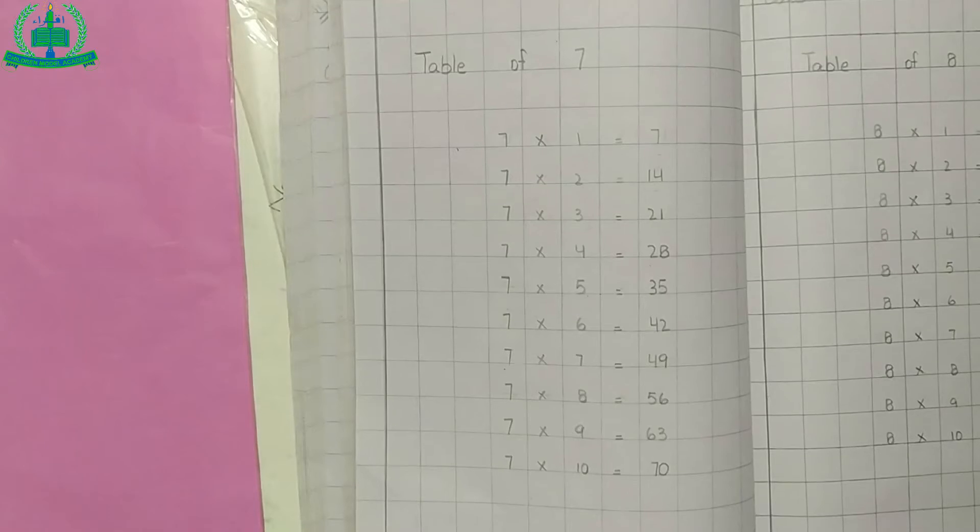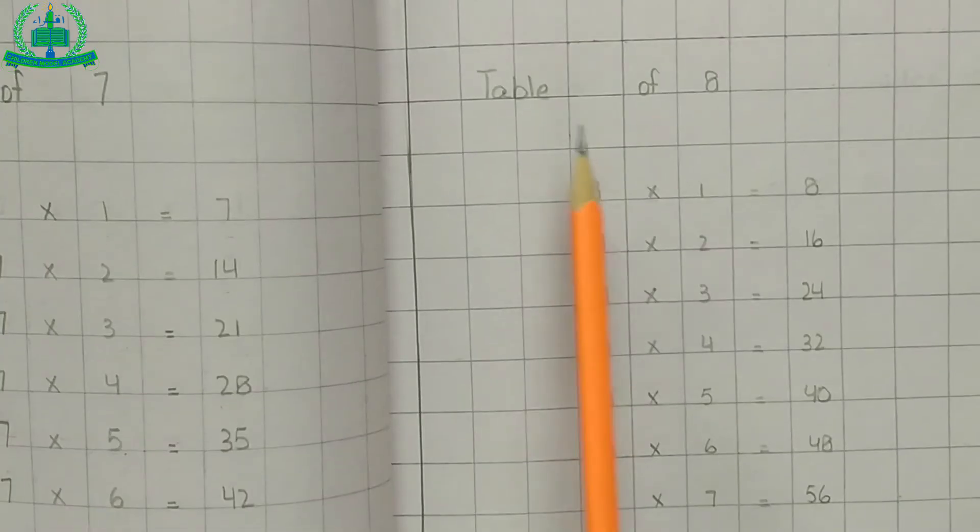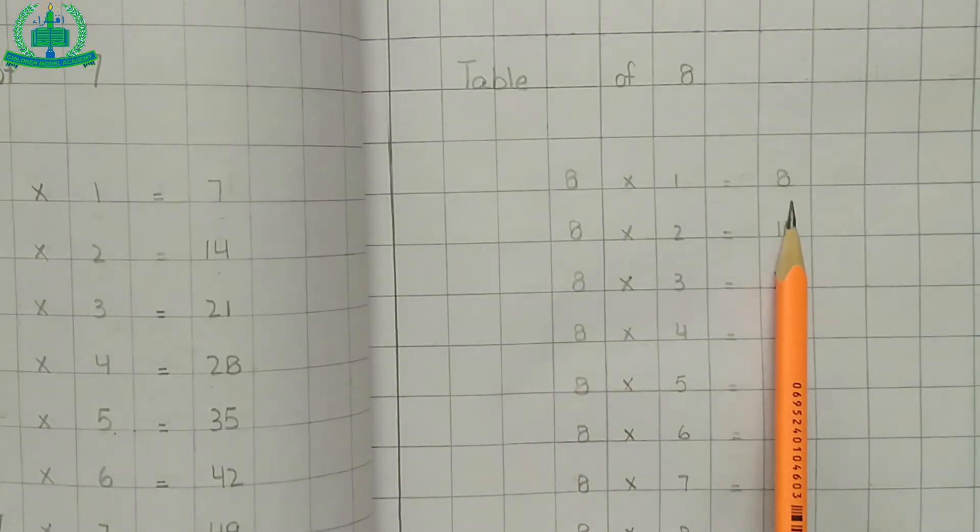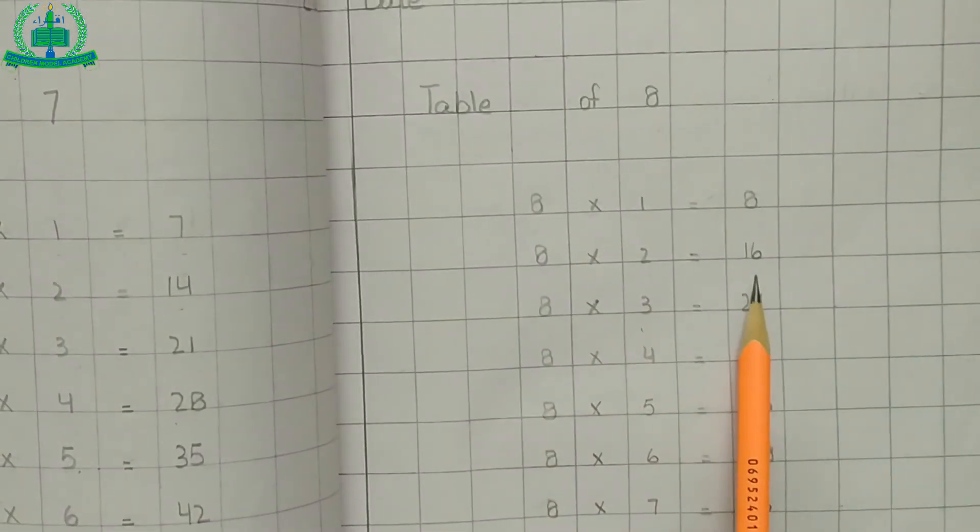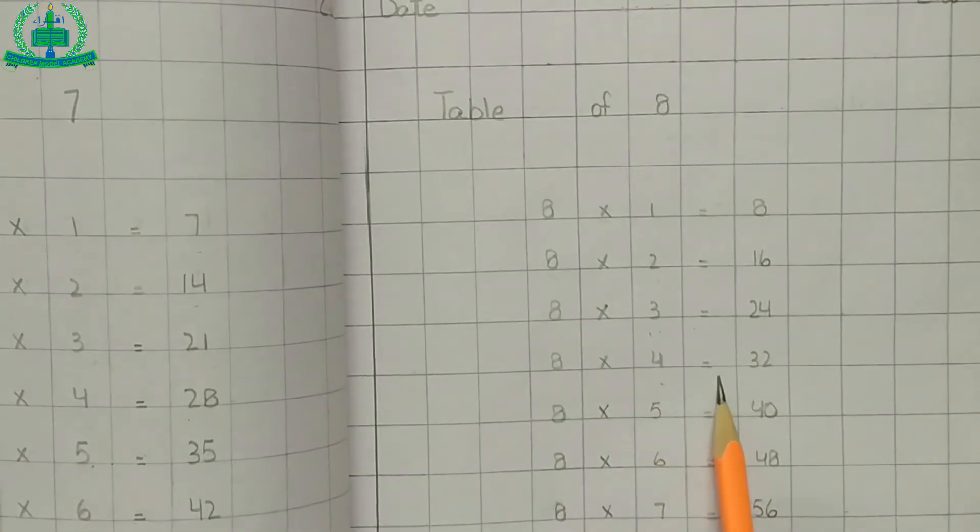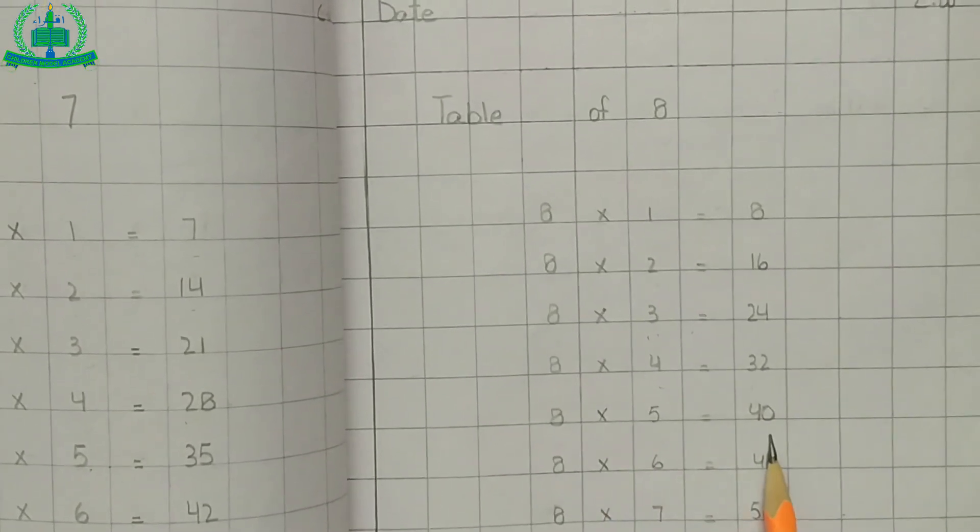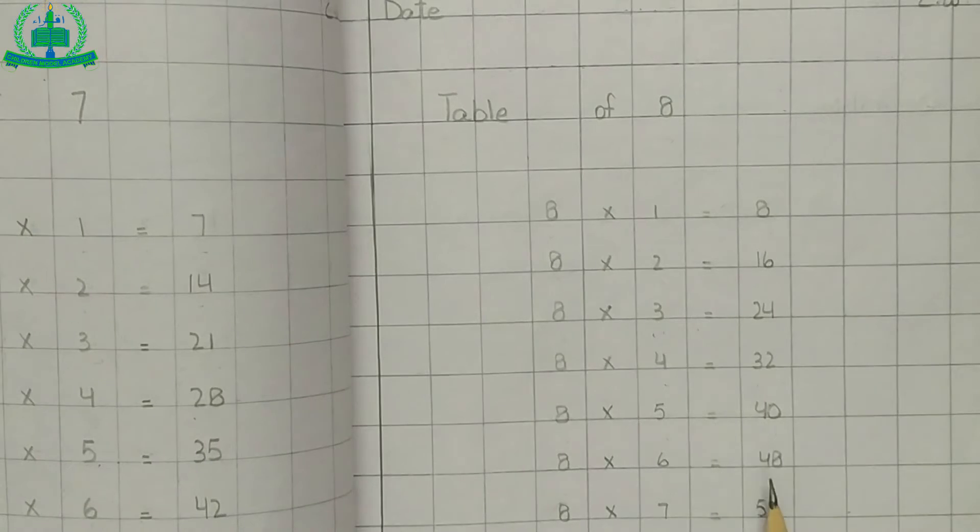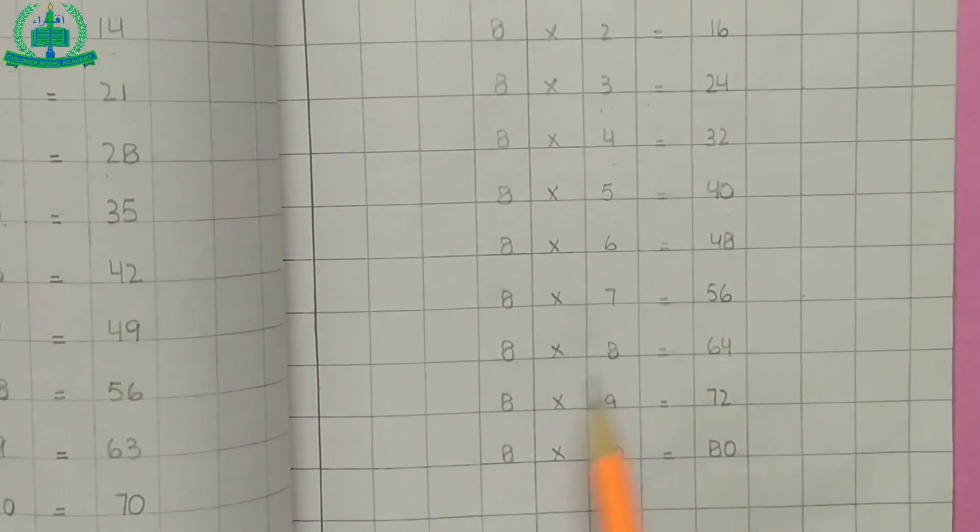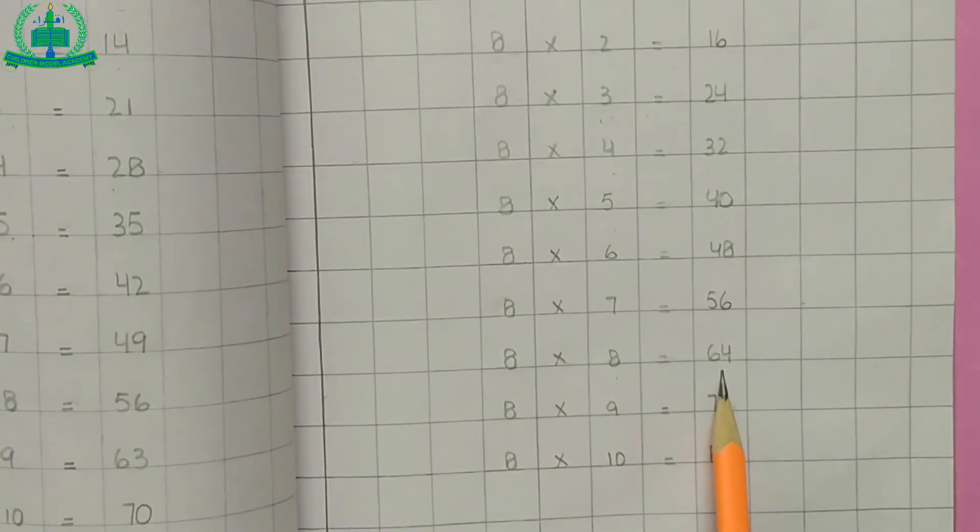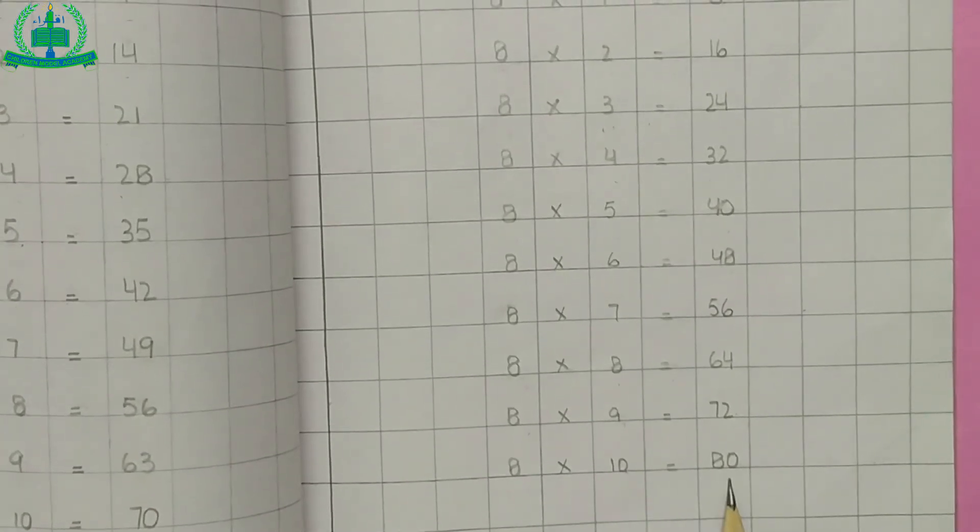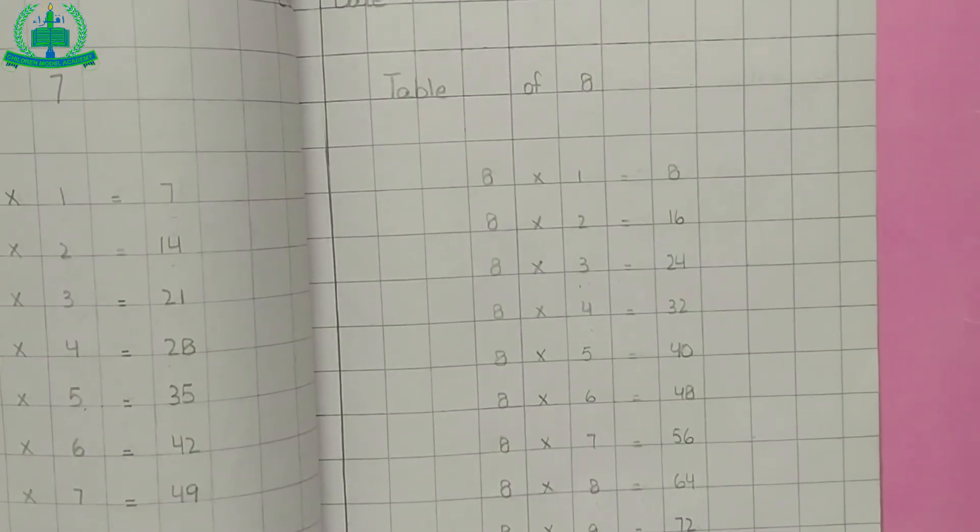Then table of 8. Eight one time is eight, eight two times is sixteen, eight three times is twenty-four, eight four times is thirty-two, eight five times is forty, eight six times is forty-eight, eight seven times is fifty-six, eight eight times is sixty-four, eight nine times is seventy-two, eight ten times is eighty. Do it in your copy.